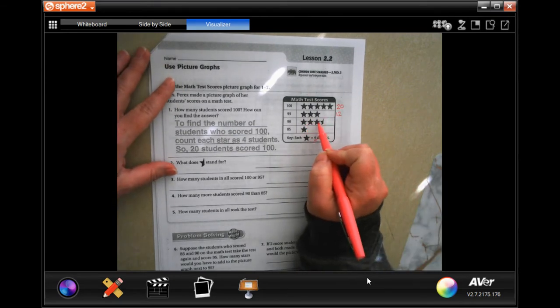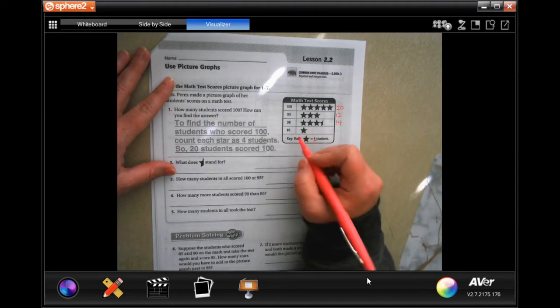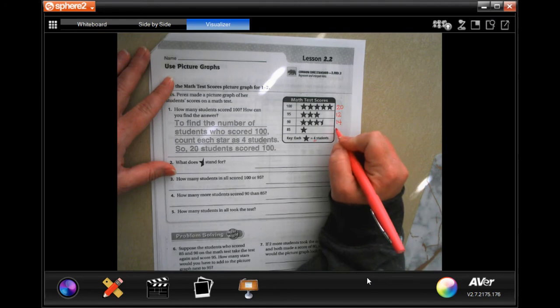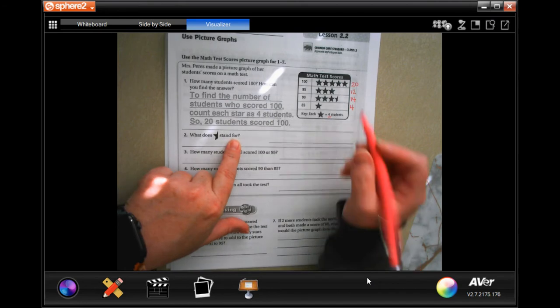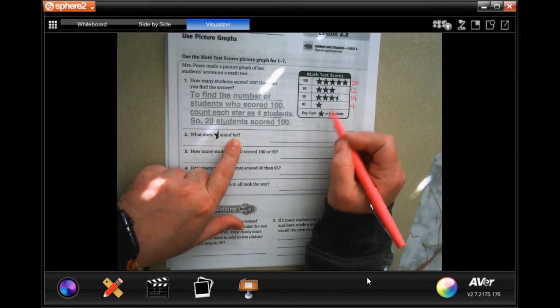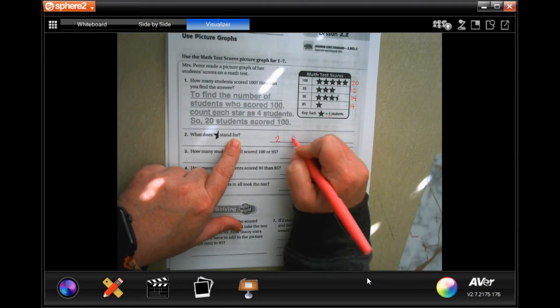So now I have four, eight, twelve, plus two more, well that's fourteen. And one star, that one's four. So what does half of a star stand for? What we just said, half of a star is going to be half of four, which is two. Two students.